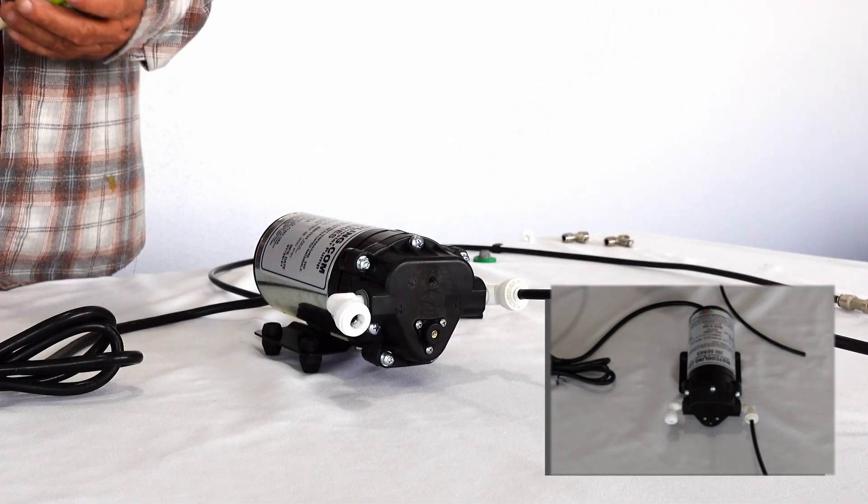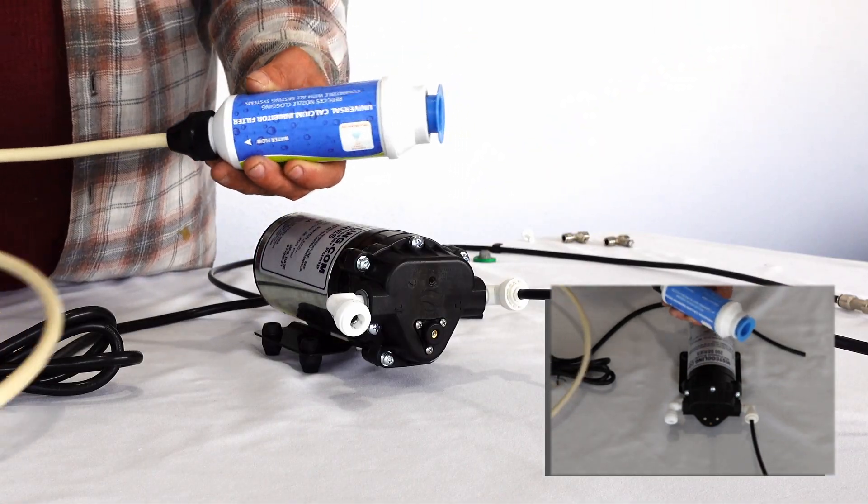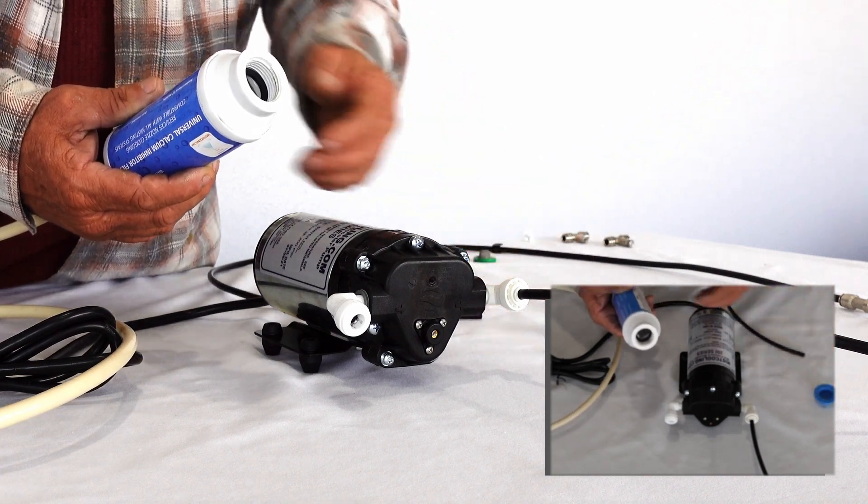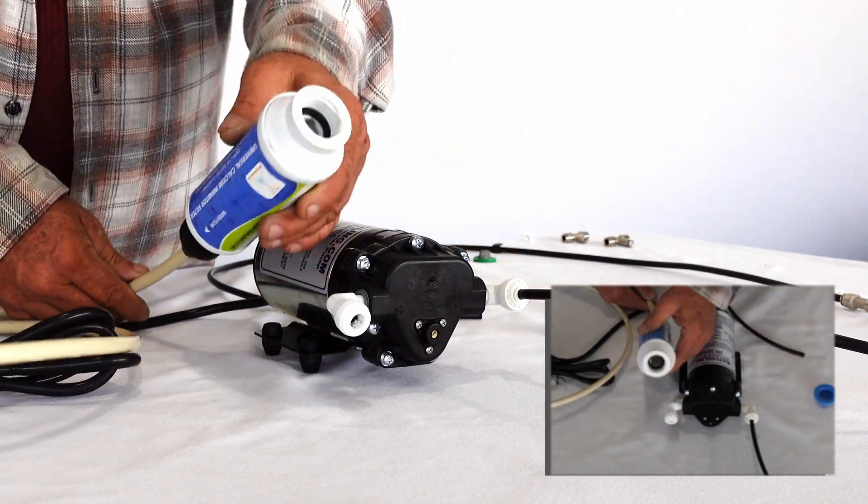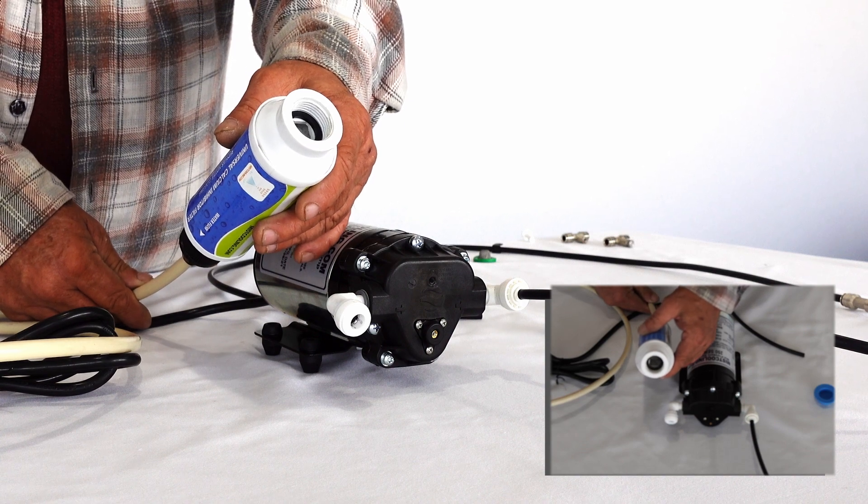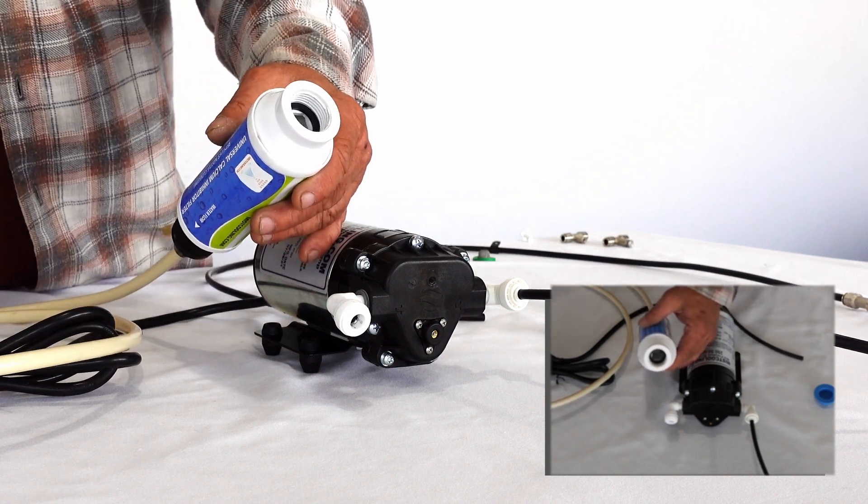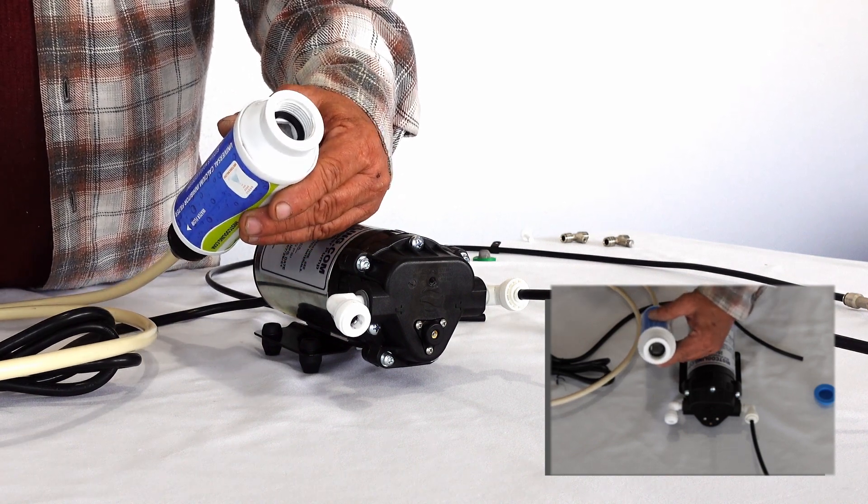Then you will take your filter. Remove this blue plug there. This will screw onto your water spigot.